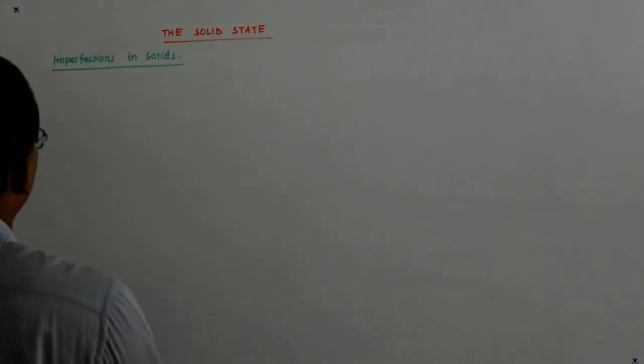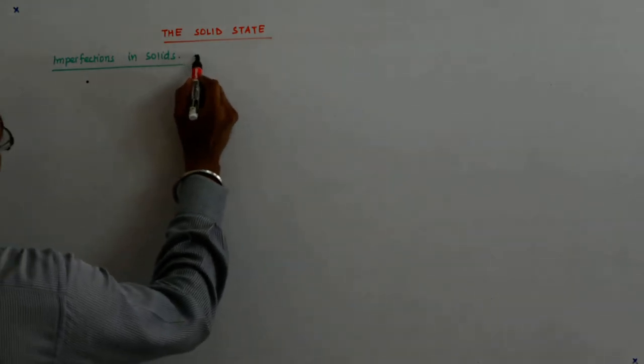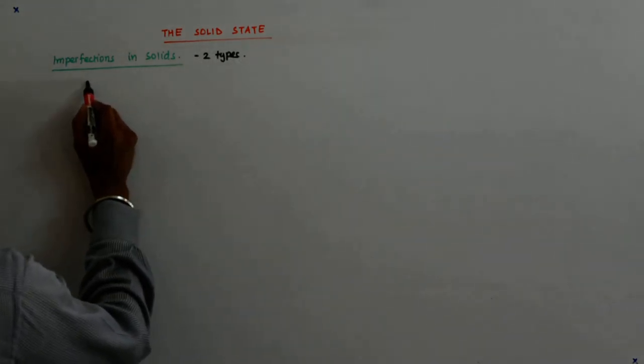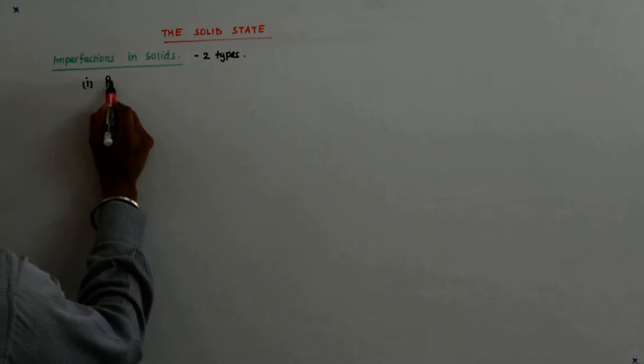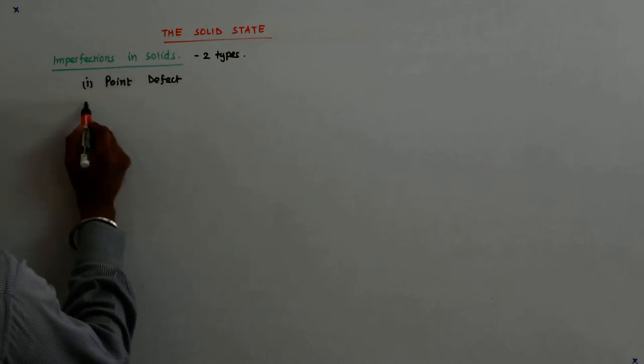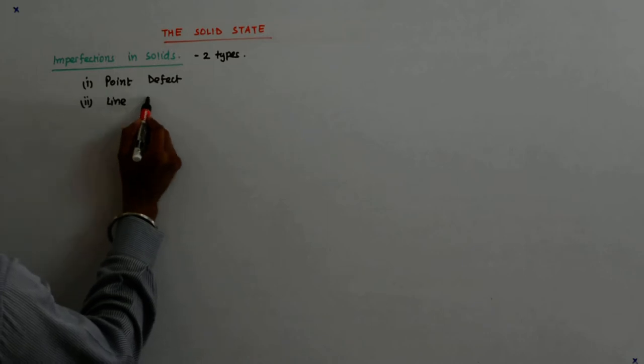These imperfections are of two types: number one is the point defect and number two is the line defect.